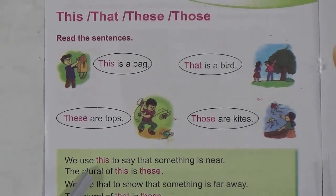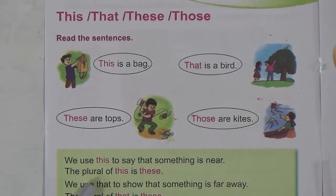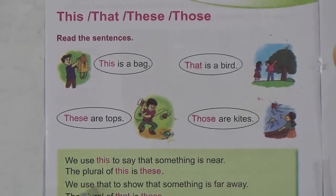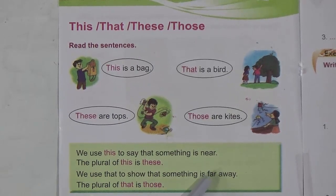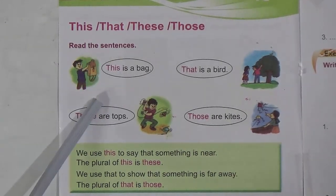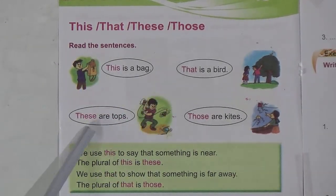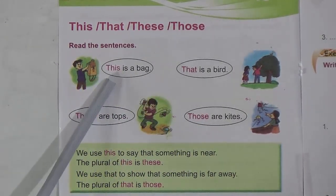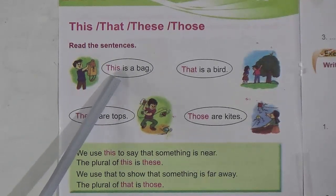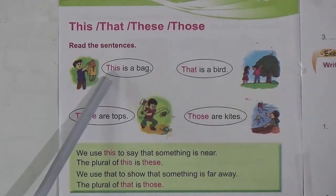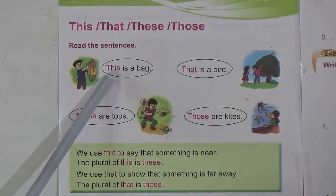So we use 'this' to say that something is near. The plural of 'this' is 'these'. We use 'that' to show that something is far away. The plural of 'that' is 'those'. So we know the use of this, that, these, and those. When we use 'this' and 'that': we use 'this' to indicate someone or something which is near to us.